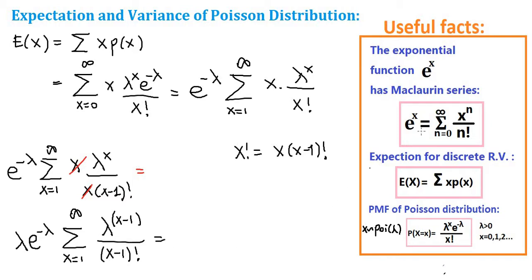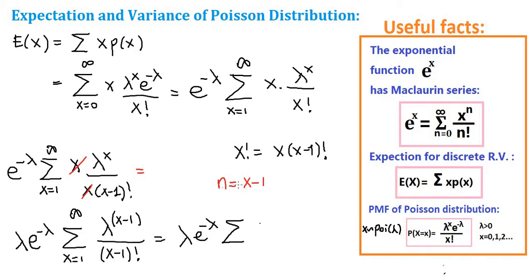Now we're going to use the Maclaurin series of e to the x. To make it look more clearly like the series — which is the sum of x to the n over n factorial — we use a substitution. Let n equal x minus 1. Then we can rewrite our summation as lambda times e to the negative lambda, with the summation running from n equals 0 to infinity of lambda to the n over n factorial. When x is 1, n will be 0.